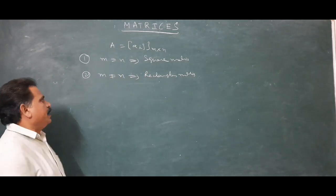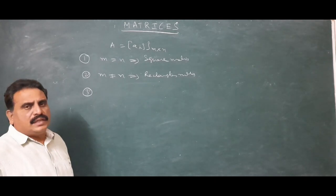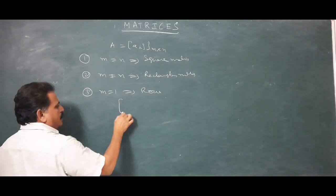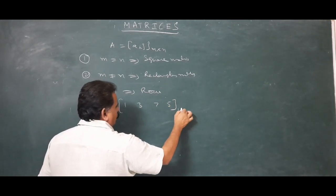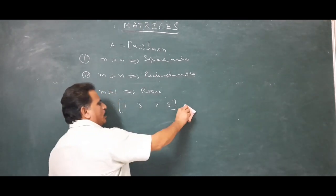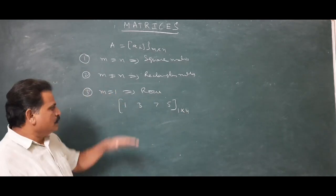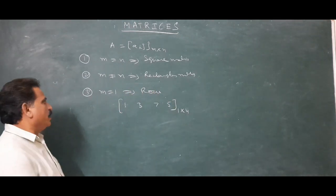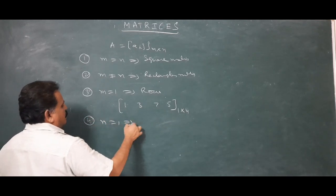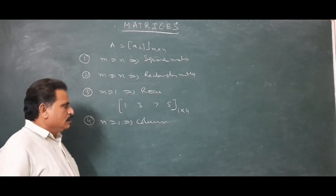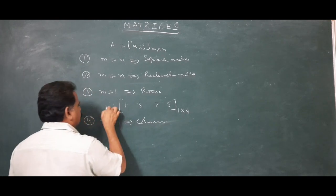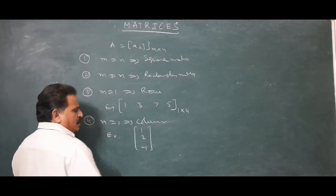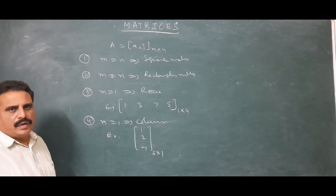Third type: Row matrix — if M equals 1, it implies a row matrix. For example, [1, 3, 7, 5] is a row matrix with 1 row and 4 columns; its size is 1 by 4. A column matrix has only one column — for example, [1, 2, minus 1] has 3 rows and 1 column, so its size is 3 by 1.